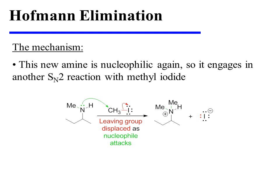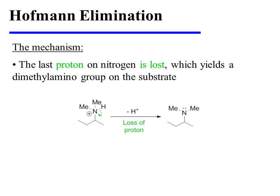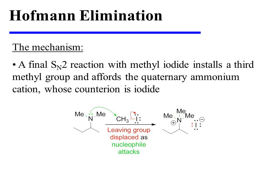The ammonium ion can then shed a proton to restore a lone pair to the amine. This new amine is nucleophilic yet again, so it engages in another SN2 reaction with methyl iodide. The last proton on nitrogen is then lost, yielding a dimethylamino group on the substrate. One more SN2 reaction with methyl iodide installs a third methyl group and affords the quaternary ammonium cation, whose counter-ion is iodide.